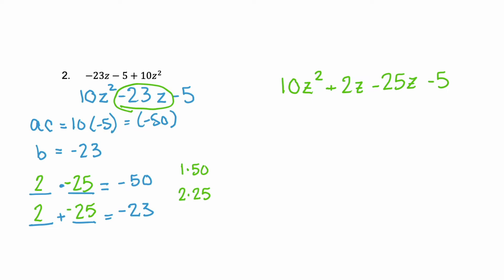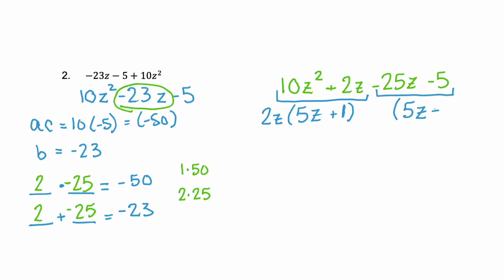Now we have four terms, so we factor by grouping. The first two terms have 2z in common, leaving behind 5z plus 1 — don't forget the placeholder of 1. When you pull a GCF out of two terms, you must have a binomial remaining. For the second grouping, we want that same binomial 5z plus 1, so we factor out negative 5. Both groups share the binomial 5z plus 1, and our second binomial is 2z minus 5.